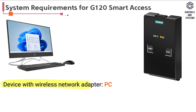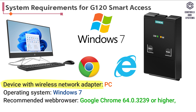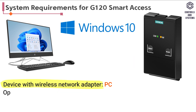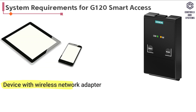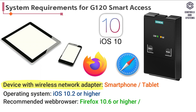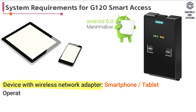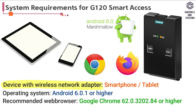HTML5 User Interface provides an interactive view with color information that allows users a feel of operating just like apps. System Requirements for PC: Windows 7 with Google Chrome or Internet Explorer; Windows 10 with Microsoft Edge. For smartphone or tablet: iOS 10.2 or higher with Firefox or Safari; Android 6.0 with Google Chrome or Firefox.